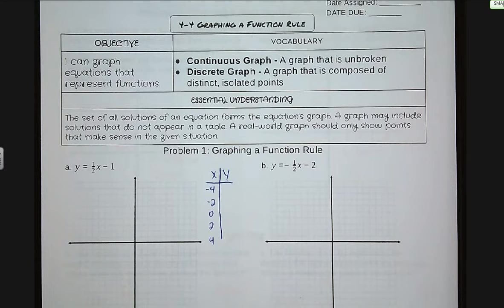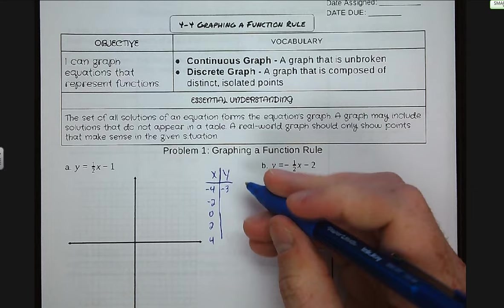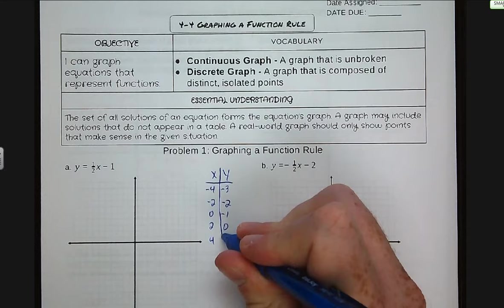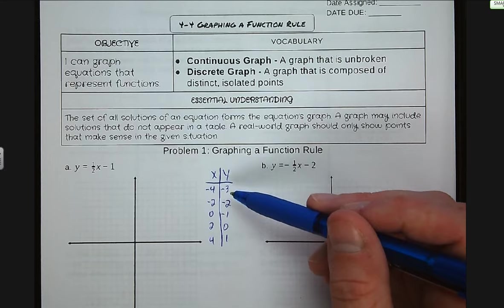Negative four times one-half minus one is negative three. Negative two times one-half minus one is negative two, negative one, zero, and one. So since this is linear, we can see our pattern — we are simply going up by one-half every time we go up by one x. So if we go up two x's, we're going up one for our y. Now we can graph these points.